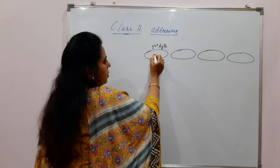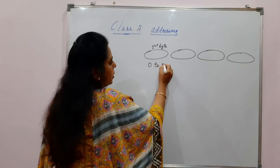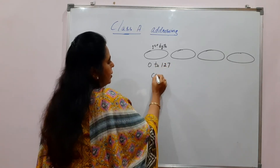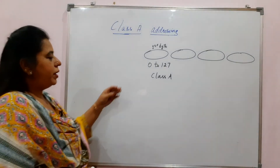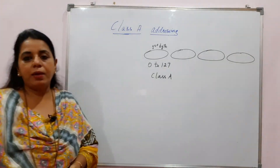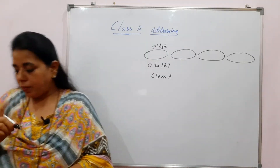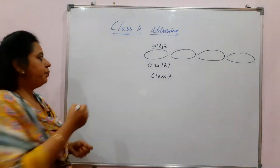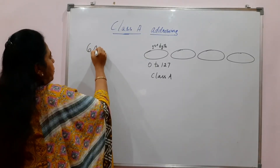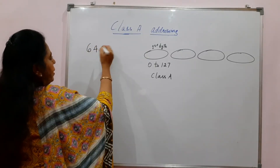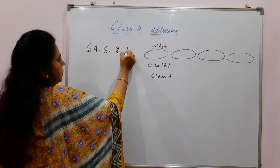Whatever number is mentioned in the IP address, if it falls in the range of 0 to 127, then it is a Class A address. Let us assume a problem statement where they have given an IP address — I will just take 64.6.8.10 something like this. So this is the IP address given.